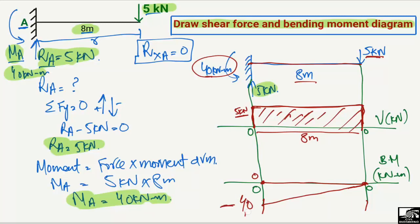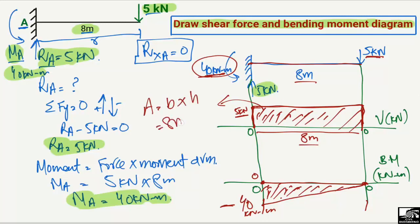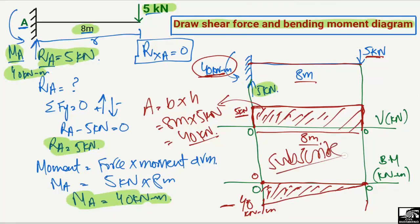The bending moment value at point A is minus 40 kN·m. We can either directly apply the known value of 40 kN·m, or compute the area of the shear force rectangle: base 8 m × height 5 kN = 40 kN·m. This is how we analyze a cantilever beam with a point load at the free end. Hope you guys understand — don't forget to subscribe to our channel. Thank you for watching.